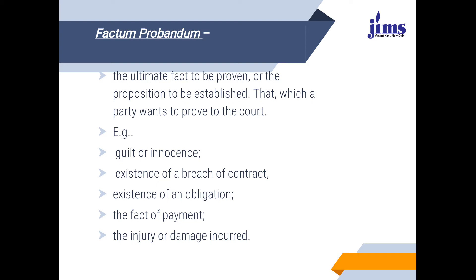In a criminal case, guilt or innocence is decided; in a civil case, rights or liabilities are decided. In that context, factum probandum is the ultimate fact to be proven — the proposition to be established that a party wants to prove to the court. In a criminal case, the court decides either the guilt or innocence of the accused, and establishing that guilt or innocence is the factum probandum.